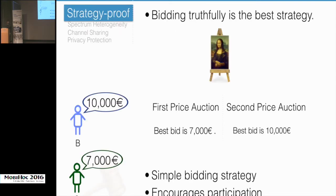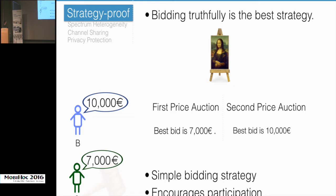Strategy-proofness means that bidding truthfully is the best strategy for every bidder. In a first-price auction, the best strategy for bidder B is to bid 7,000 rather than their true valuation, since the winner pays the amount they bid. In a second-price auction, the winner pays the second-highest bid, so the best bid is one's true valuation of 10,000. A first-price auction is an example of a non-strategy-proof auction, where the bidder must strategize and utility depends on their chosen strategy, which discourages participation.